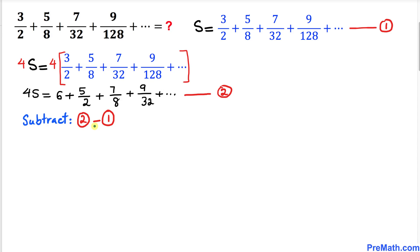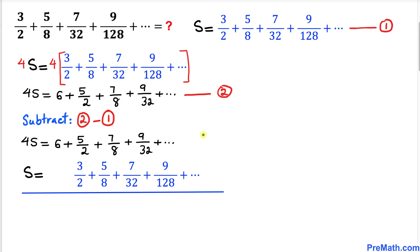Our next step is to subtract equation 1 from equation 2. Here is equation 2 and here is equation 1, copied down. Since we are subtracting, let's change the sign of the bottom equation — each term becomes negative. On the left hand side, 4s minus s gives us 3s.